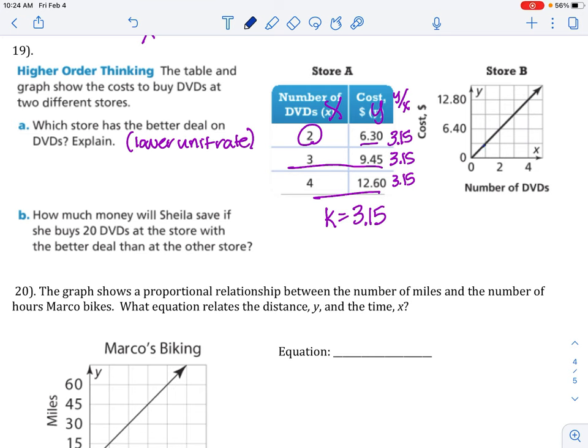B, let's find the unit rate from a graph. Remember, pick a point. You wouldn't pick this point because, look, it doesn't have a number with it. You can figure it out, but don't. Make it easier. Pick this point because you have this y divided by this x. 6.40 divided by 2 gives you 3.20 for the unit rate of this graph. So, if you compare, obviously store A has the smaller unit rate.